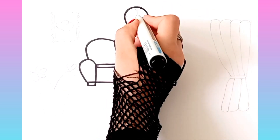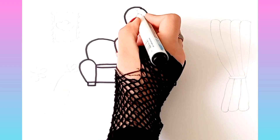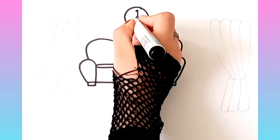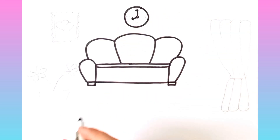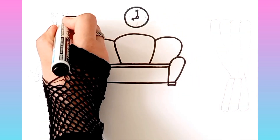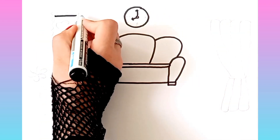G is for goat, g, g, goat. H is for hand, h, h, hand.